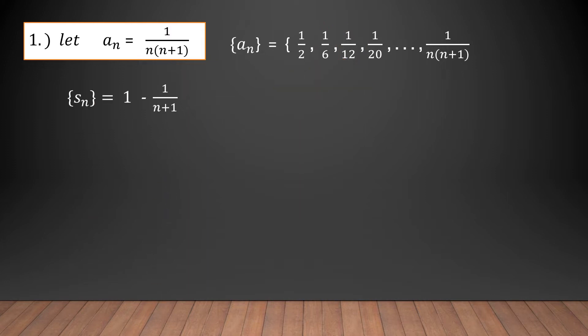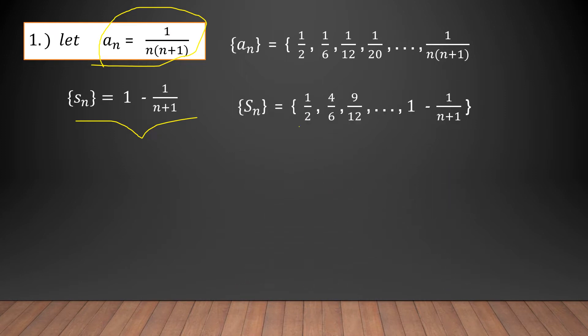From the previous video, we were able to determine that the formula for the partial sums of this sequence is 1 minus 1 over (n plus 1). If we write the terms of the sequence of partial sums, we have 1/2 — that is S_1 — and 4/6, which is when we add a_1 and a_2, which is 1/2 plus 1/6.